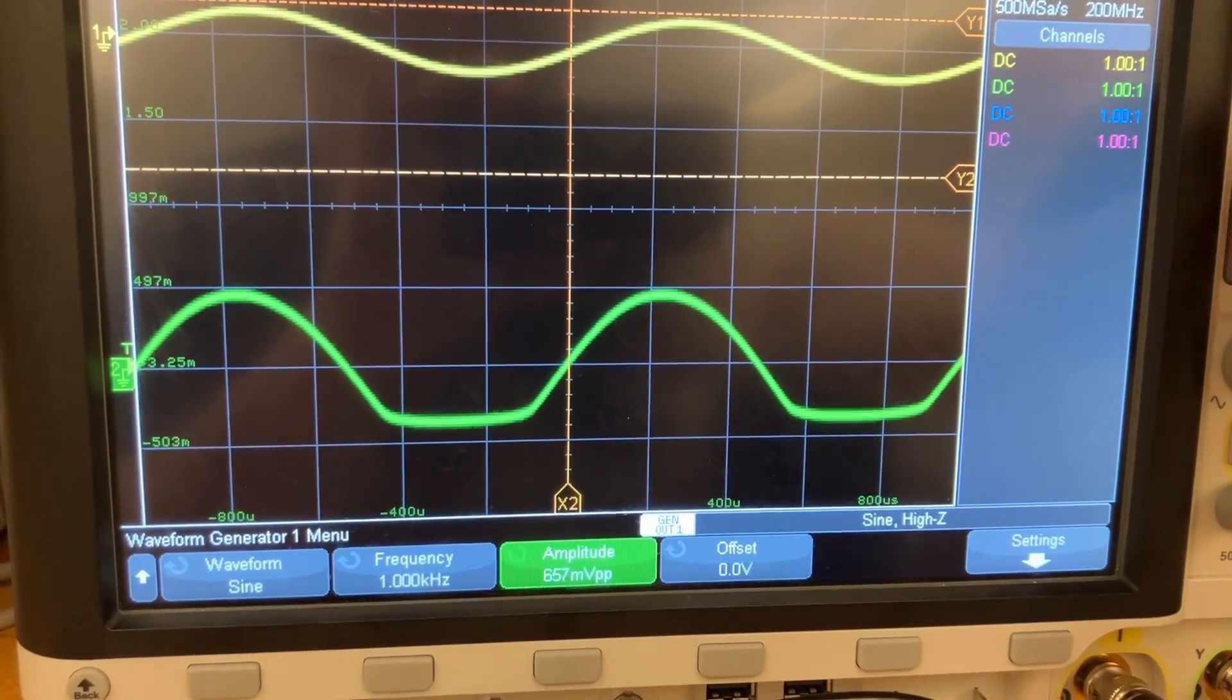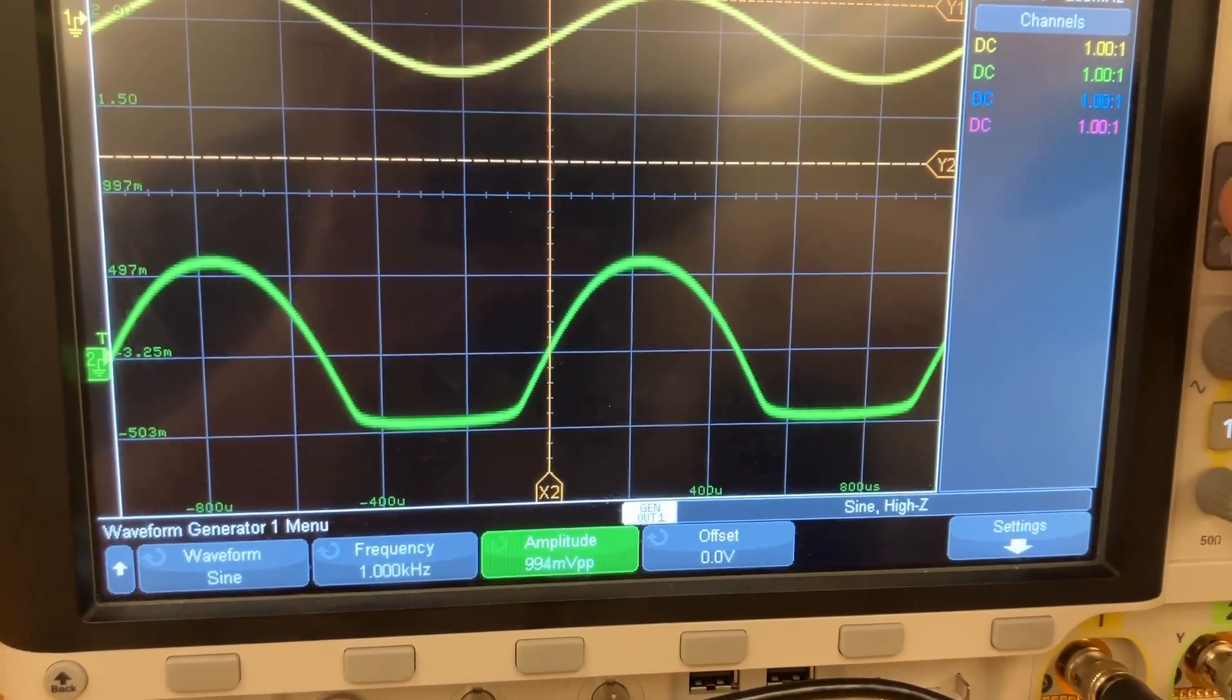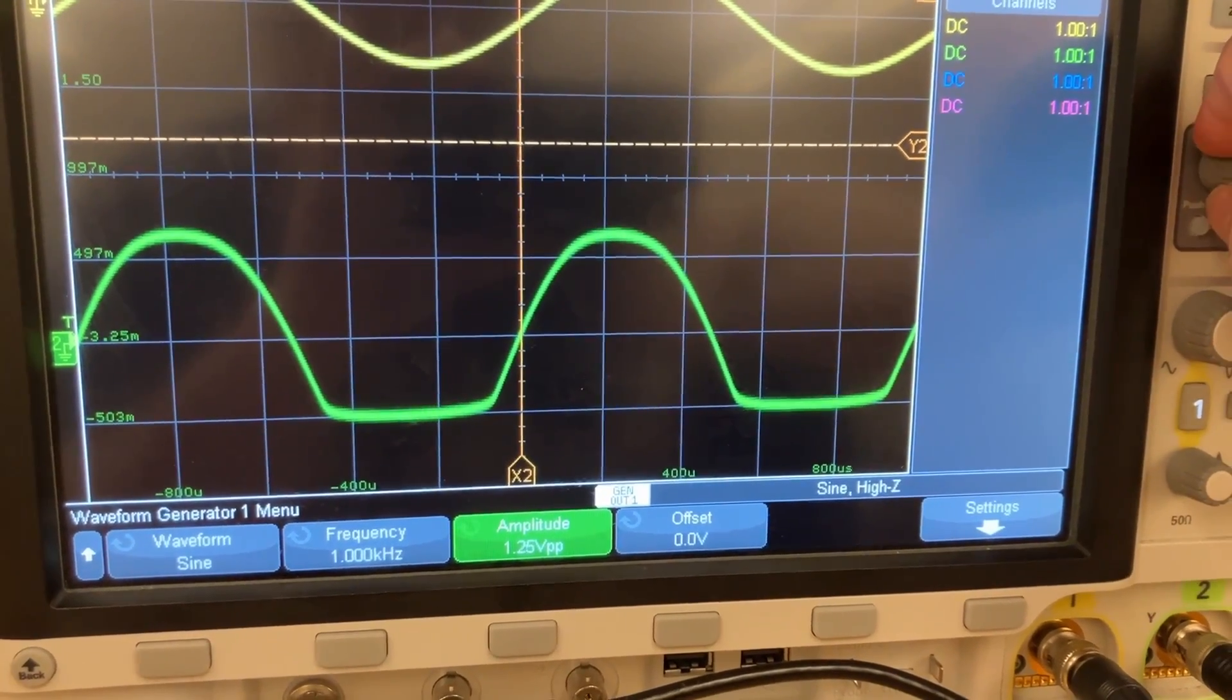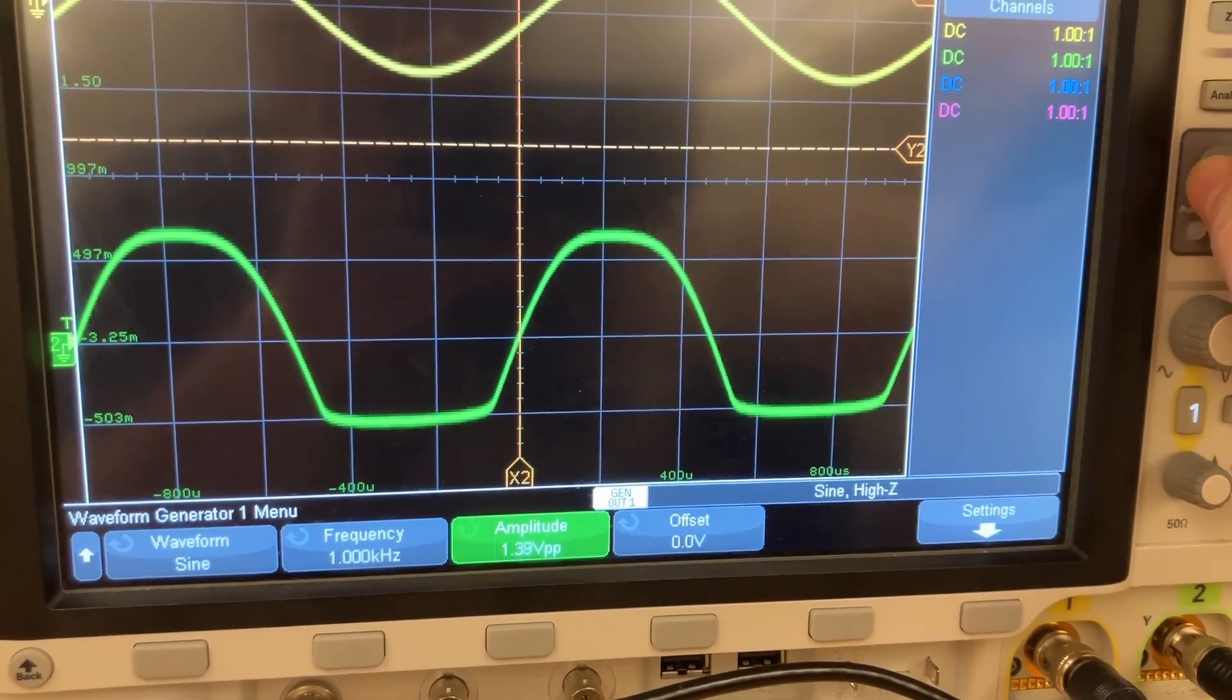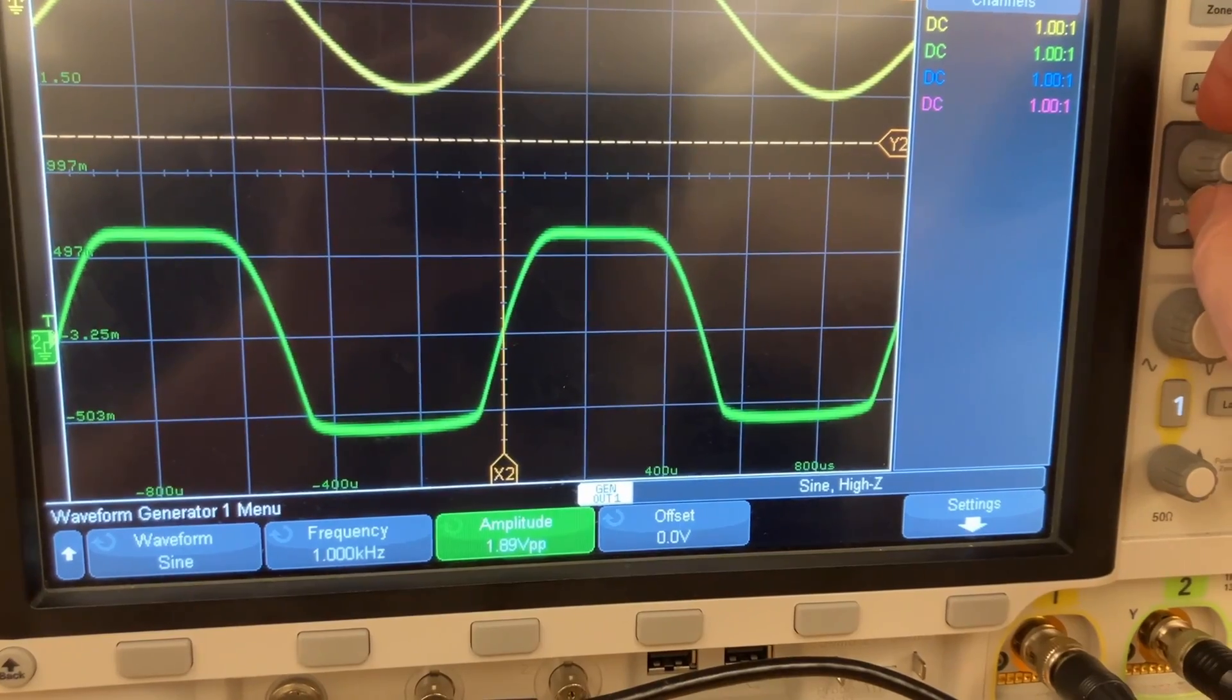And as I increase that, eventually, let's see, it's still pretty nice on the top. Okay, around here, let's say I'm at 1.2 volts, something like that. But you can see it start to level out on the top. So there's definitely an asymmetry in the response.